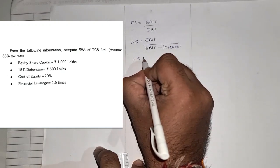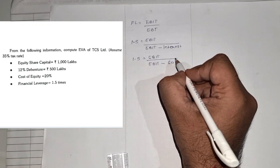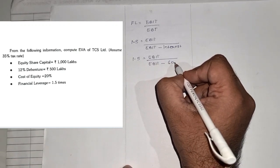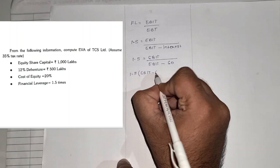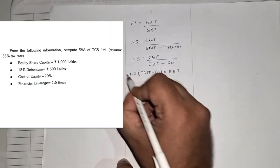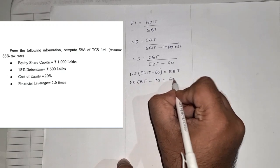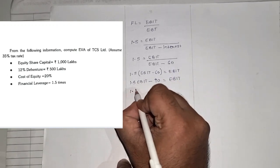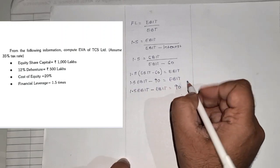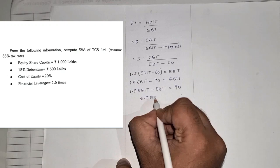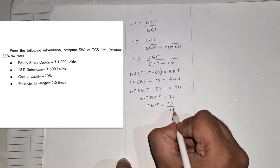Cross-multiplying: 1.5 × (EBIT − 60) = EBIT → 1.5 EBIT − 90 = EBIT → 0.5 EBIT = 90 → EBIT = 180 lakhs. EBIT is Net Operating Profit Before Interest and Tax = 180 lakhs. Less Tax at 35%: 180 × 35% = 63. Net Operating Profit After Tax = 180 − 63 = 117 lakhs.